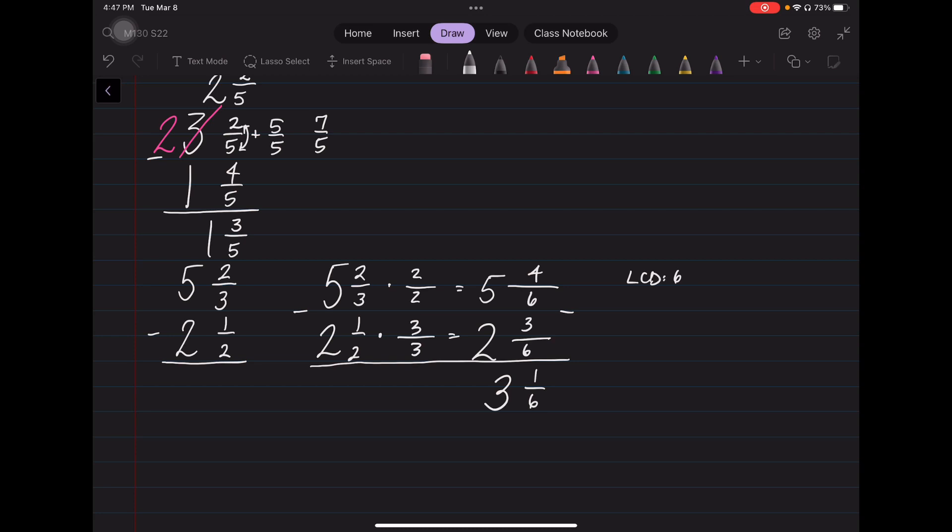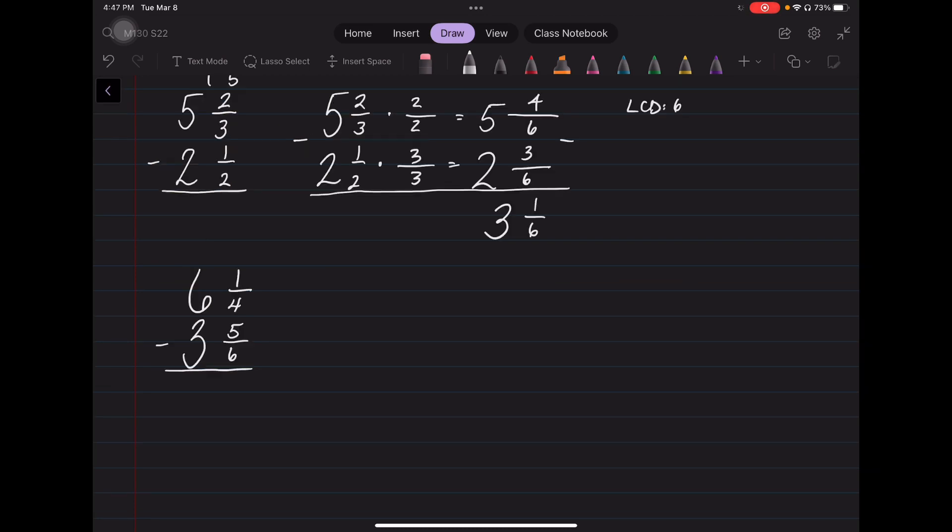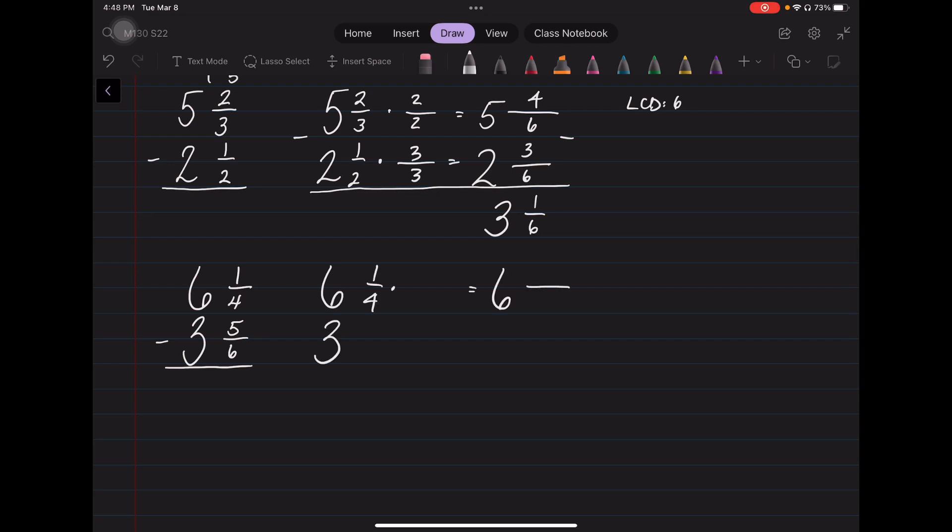Let's try another one that has a non-common denominator where you also need to borrow. Say I have 6 and 1 fourth minus 3 and 5 sixths. I have to first find a common denominator. I'm going to keep the 6, keep the 3. What's my common denominator of 4 and 6? Remember, there's lots of common denominators, but the least common denominator is 12.